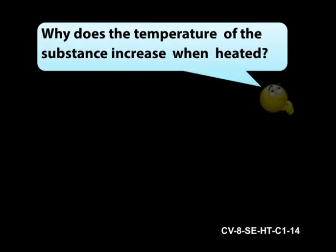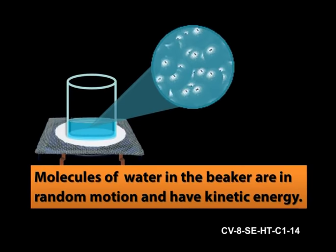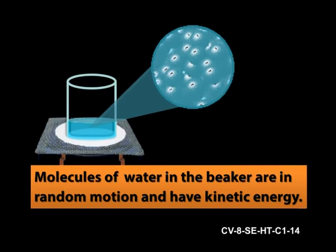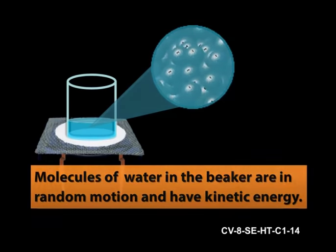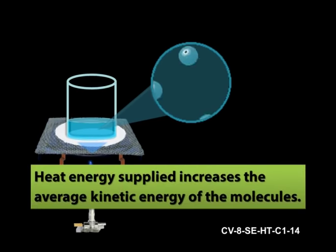Now, why does the temperature of the substance increase when heated? Consider water in a beaker. We know that molecules of water in the beaker are in random motion and have kinetic energy. Due to this, they possess heat energy. Let us heat the water. Water molecules move with more kinetic energy and they collide with each other. This results in changes in speed and direction. As a result, there is not a single speed at which the different molecules move. So, we have a range of kinetic energies. Heat energy supplied increases the average kinetic energy of the molecules. This increase in average kinetic energy is called temperature.